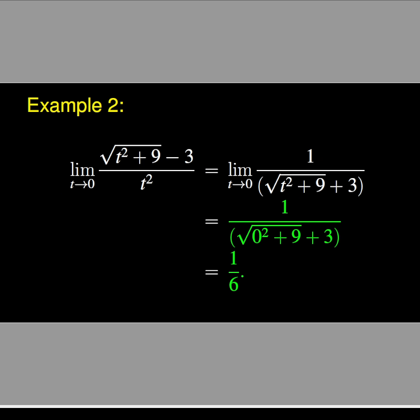We plug in 0 in the simplified expression and find out that the limit is 1 divided by √(0² + 9) + 3, which is equal to 1 divided by √9 + 3. Therefore, the limit is 1/6.